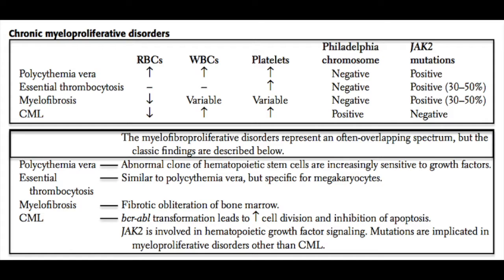For myelofibrosis, early in the course of the disease you can see an increase in white blood cells and platelets — more of a reactive phenomenon. But as the disease progresses and the bone marrow gets replaced by fibrosis, you'll see a drop in all three cell lines and a true pancytopenia. It is negative for the Philadelphia chromosome, but positive for the JAK2 mutation in about 30 to 50 percent of cases.